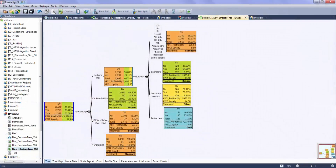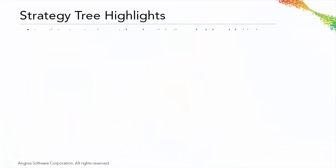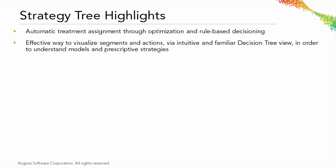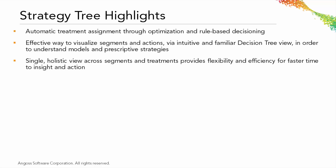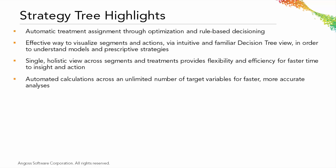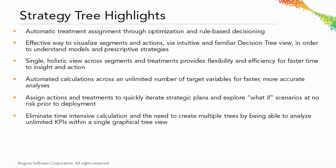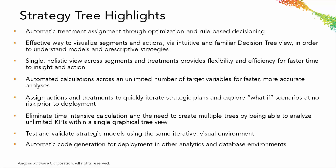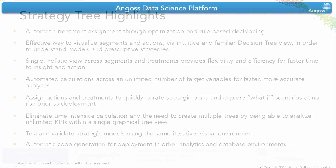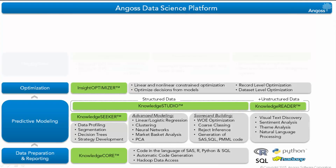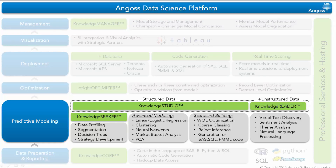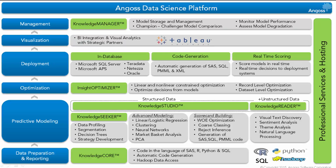Throughout this demonstration, we've seen how strategy trees are a powerful tool for applying predictive analytics, transforming key performance indicators and business knowledge into actionable strategies. Strategy trees are available in Knowledge Seeker, Knowledge Studio, and Knowledge Reader. For more information on these and other Angost analytics products and services, visit us at angost.com.